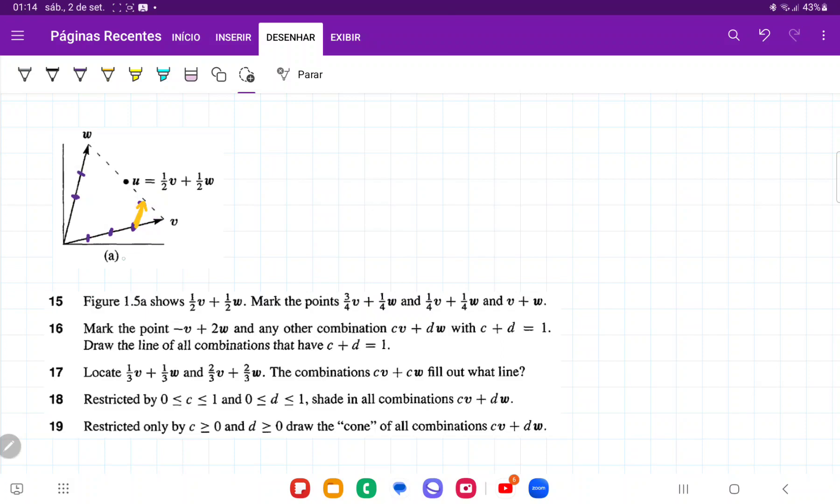So we can see that this vector here, this point, should I say, so that's about here. Maybe I'm going to put it in a different color. So this one here is going to be 3 v plus 1 quarter, oops, 3 fourth v plus 1 quarter w.